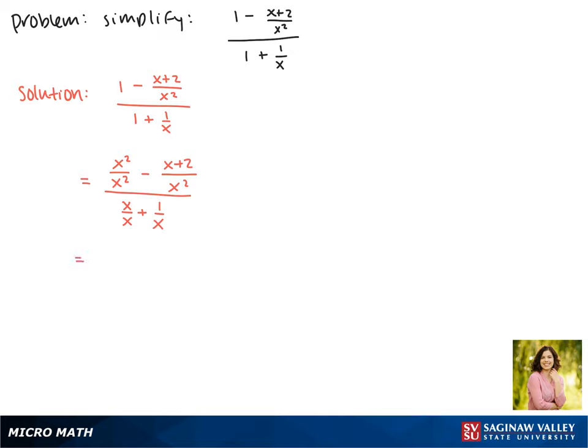Now that we have these common denominators, we can combine. So in the numerator, we get x squared minus the quantity x plus 2 over x squared divided by x plus 1 over x.